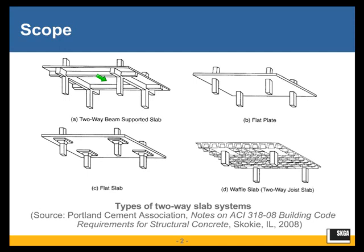As the panels become more squarish and the long to short side ratio goes below two, there is significant load transfer by bending in both directions, and then we design them as two-way slabs.